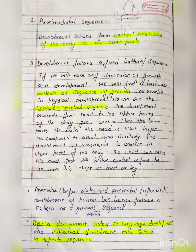Every child follows this pattern. Like physical development, then motor development, then language development, then intellectual development — there is also a pattern. First, physical development occurs, then motor skills develop, then you learn to speak and language develops, then intellectual development. A definite sequence follows.